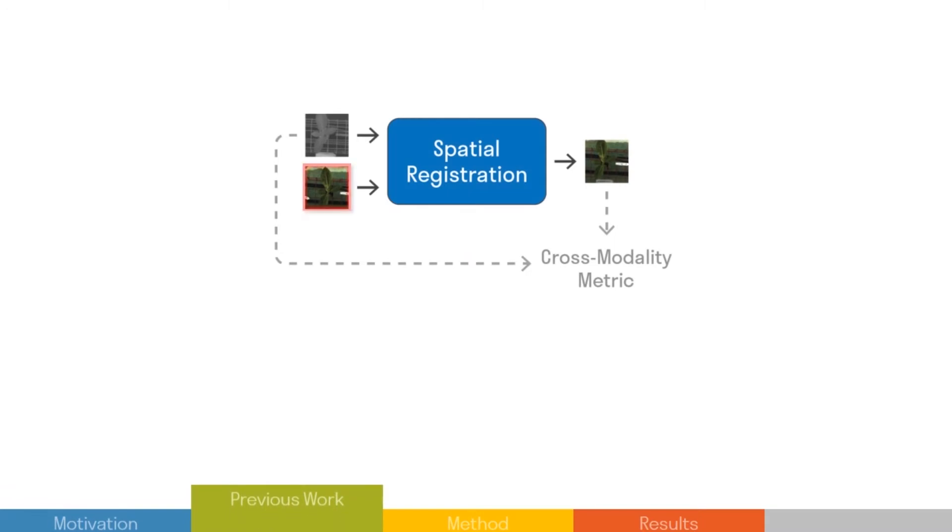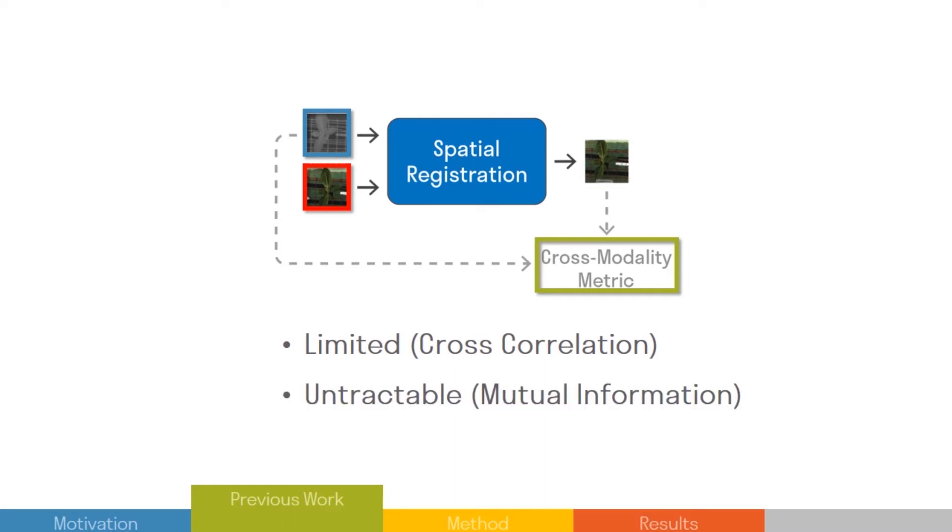Previous methods align the source image with the target image by maximizing similarity metrics like mutual information or cross-correlation. However, these metrics can be limited to specific domains, or they are hard to compute.